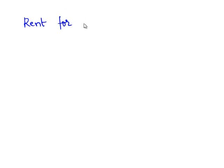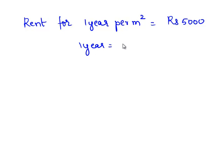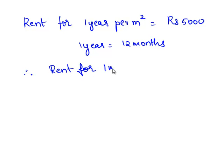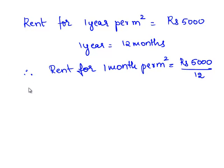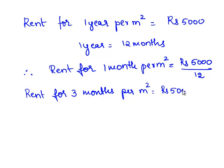As given in the problem, rent for 1 year per meter square for the advertisements is equal to rupees 5000. Since 1 year equals 12 months, rent for 12 months per meter square is rupees 5000. Therefore, rent for 1 month per meter square is rupees 5000 divided by 12. Now, rent for 3 months per meter square is rupees 5000 divided by 12, times 3, which is equal to rupees 1250.